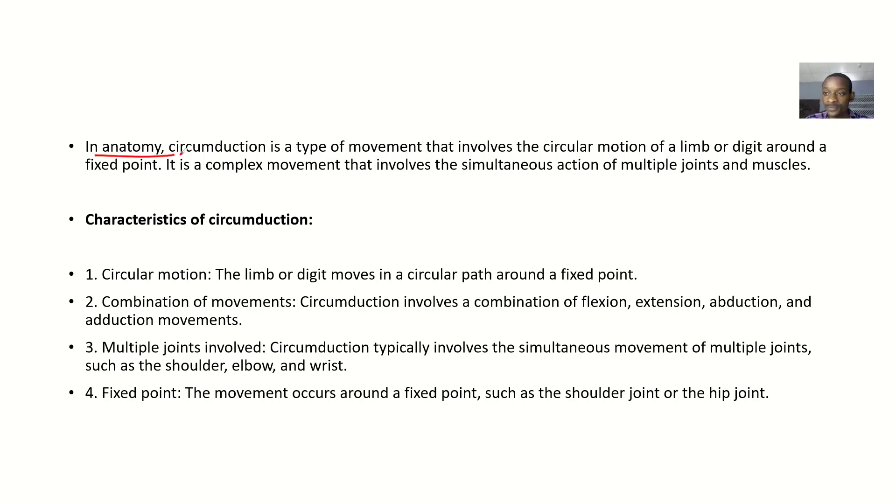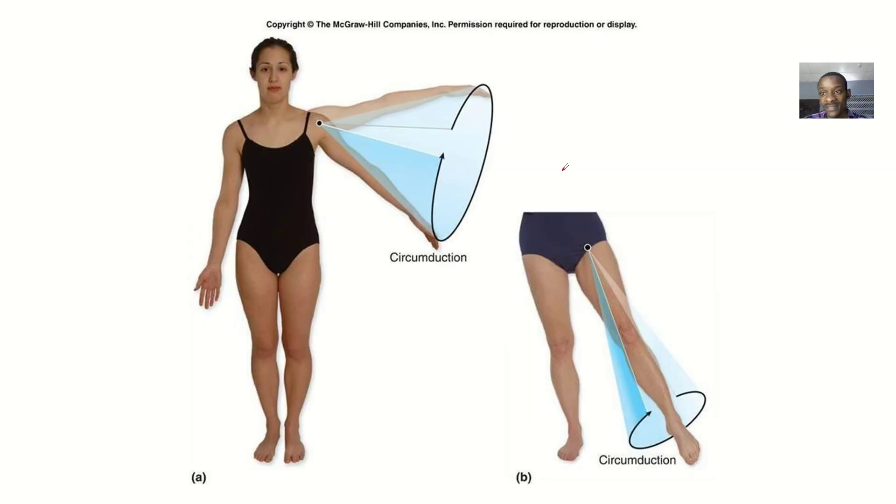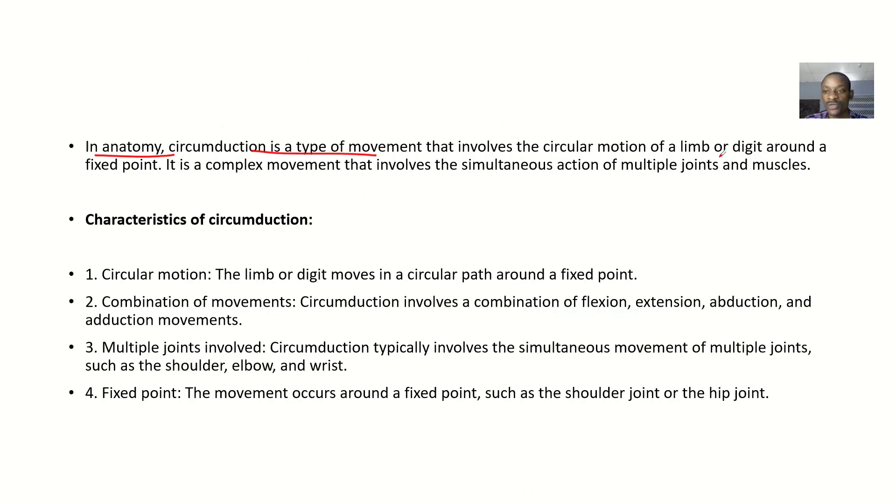In anatomy, circumduction is a type of movement that involves the circular motion of a limb or digits around a fixed point. The limb is moving in a circular position, but it is fixed at one point.